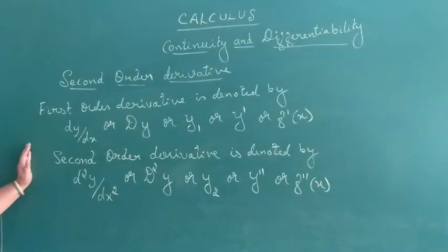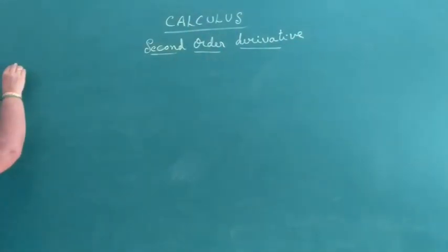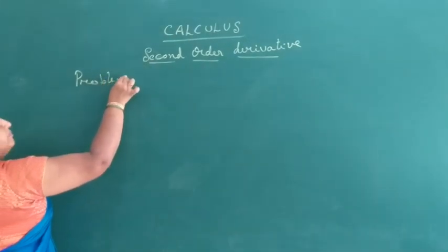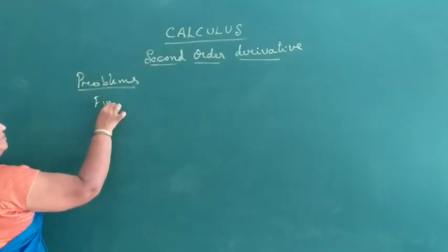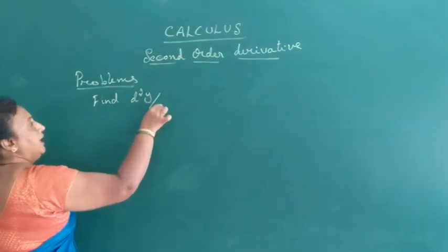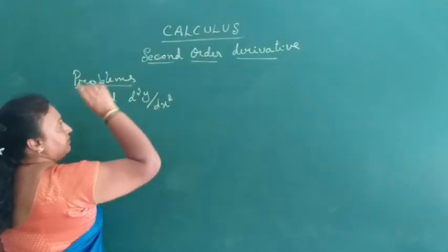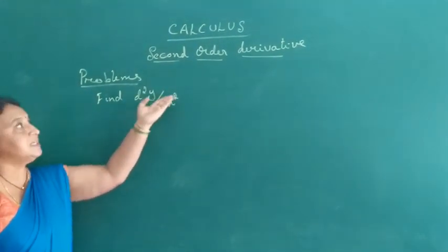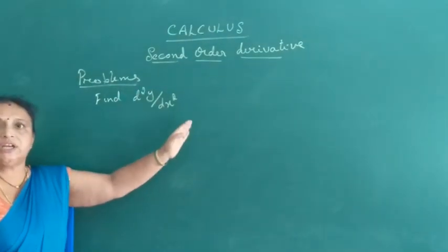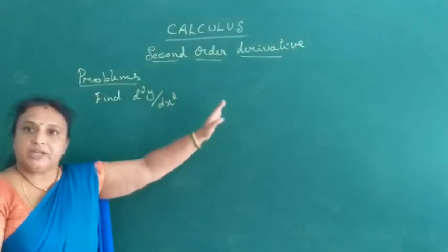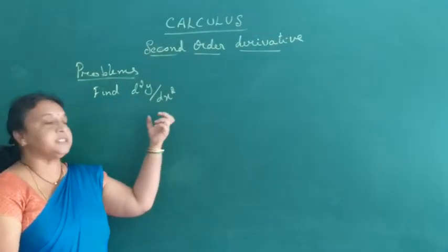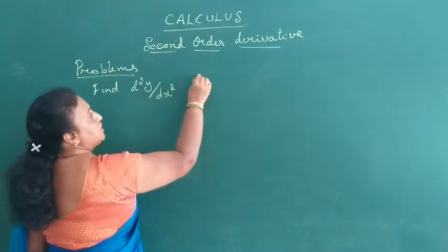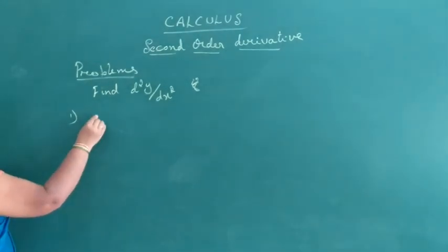Now we shall go to the problems. Find d²y/dx². To find the second order derivative, first we shall find the first order derivative, then again differentiate with respect to x — then it is the second order derivative. Find d²y/dx² for the following problems.